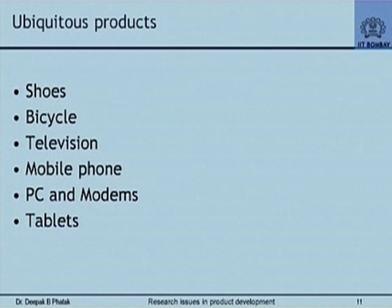Go back to this list — look at television, mobile phone, PC and modems, tablets. You can all add to this list at least 50 different ubiquitous products that you and I use in everyday life: a fountain pen, any furniture item, a water supply system. Consider that behind these ubiquitous products there has to be a whole lot of continuous R&D going on somewhere. Why not you and I participate in this kind of R&D?